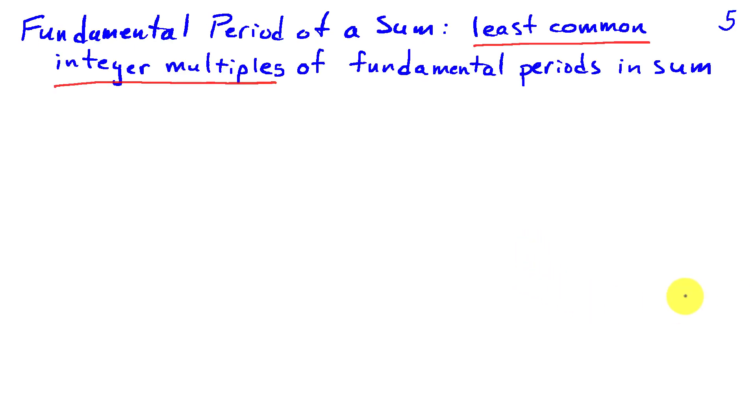That was a very special case of a sum of signals. In general if we're looking at the fundamental period of a sum, we have to find the least common integer multiples of the fundamental periods of each of the signals in the sum. That's a lot easier to illustrate than it is to say.